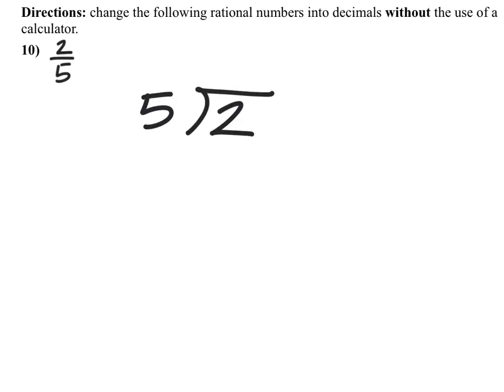And 5 in this case does not go into 2, so it goes into it exactly 0 times. So we kind of treat this as a 20, which 5 will go into, let's say 4 times and see if that's correct, which it is. Because 4 times 5 is 20.